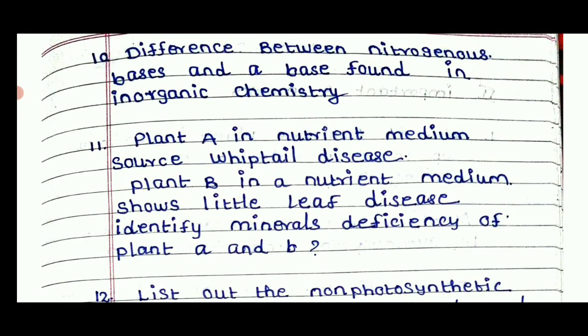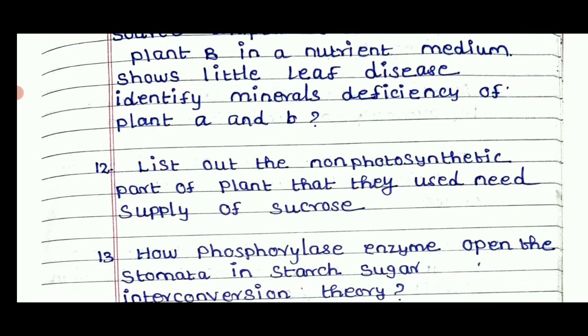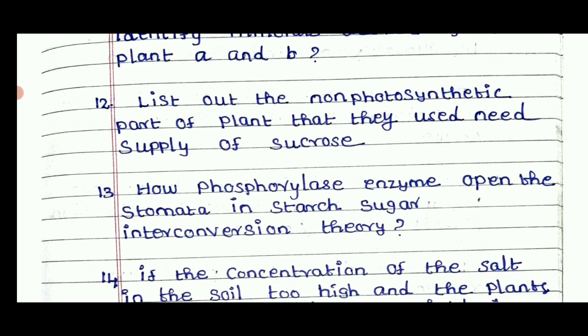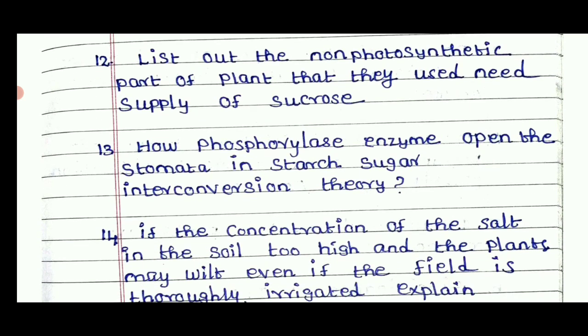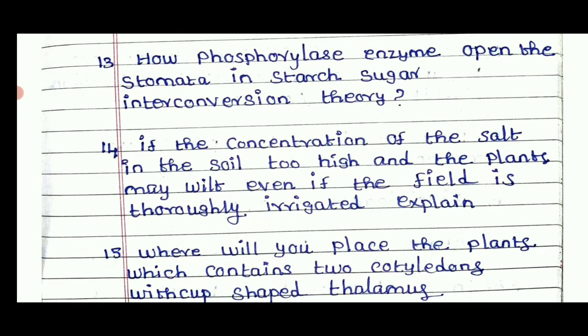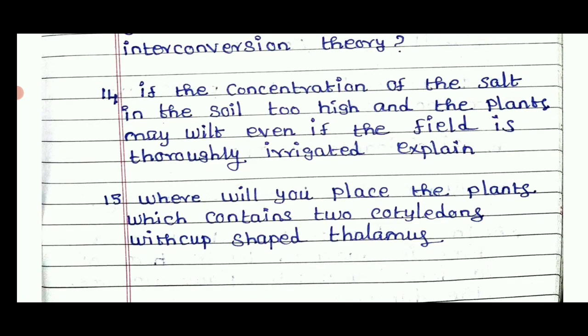The difference between nitrogenous base and base found in inorganic chemistry. A plant in a nutrient medium as a source of reptile disease. List out the non-photosynthetic parts of plants that need supply of sucrose. How phosphorylase enzymes open the stomata in starch-sugar interconversion theory. If the concentration of salt in the soil is too high, the plants may be wilted even for the truly irrigated soil. Plants which contain two cotyledons with cup-shaped thalamus.